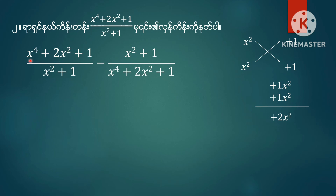This is called x⁴ plus 2x squared plus 1 plus 1 over 2x squared, and x squared plus 1 equals 1 over x² plus 1.